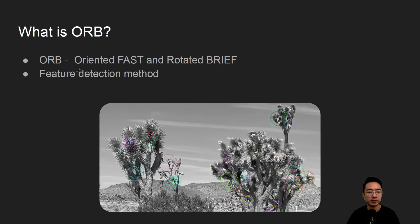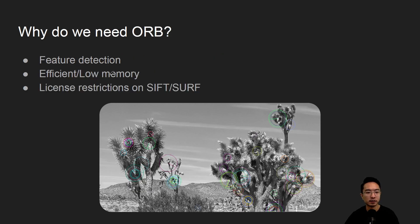So what is ORB? First off, it stands for Oriented FAST and Rotated BRIEF. You can see it combines both the FAST and BRIEF concepts that we talked about previously. The idea is it's supposed to be much faster and it's a feature detection method to get around SIFT.